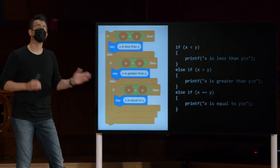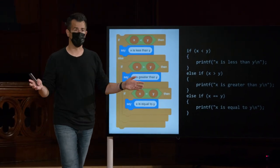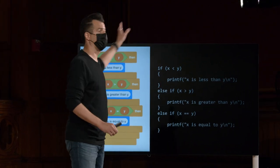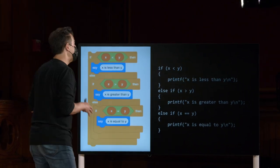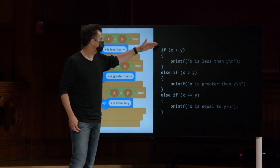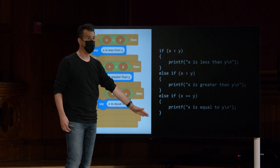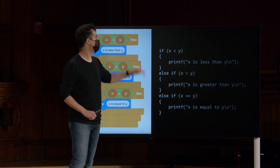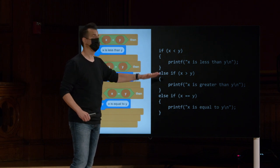Agora, por que isso é uma coisa boa? Se, por exemplo, x e y se igualarem, eu digito um e um para ambos os valores, seja no Scratch ou no mundo do C, no caso dessa versão, você está meio que estupidamente fazendo três perguntas, todas as quais serão feitas mesmo que a resposta seja não, não, sim. Isso é falso, falso, verdadeiro.